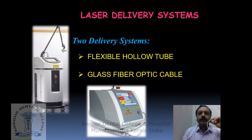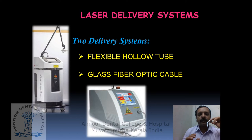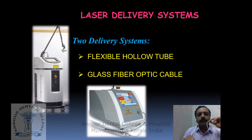Coming to the laser delivery system. There are two types. First is the flexible hollow tube, which contains a flexible hollow tube with an interior mirror finish. The laser energy is reflected along the hollow tube and exits through a handpiece at the surgical end, with the beam striking the tissue in a non-contact mode, that is without directly touching the tissue. The second type is the glass fiber optic cable — a glass tube encased in a resilient sheath. It is fragile and non-flexible, and can be used in both contact as well as non-contact mode.